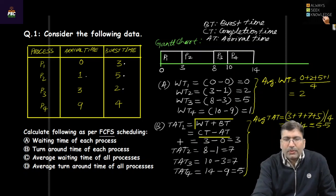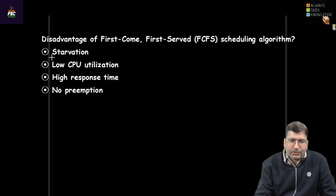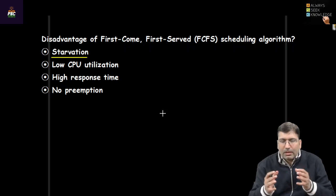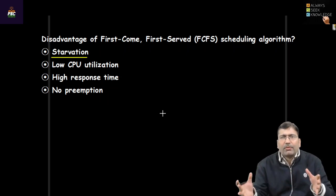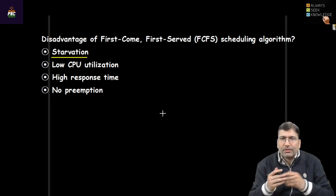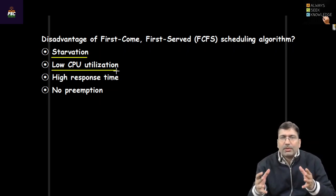Now let's discuss the drawbacks of First Come First Serve. First, there can be a starvation problem — if a process requiring a very large number of CPU cycles arrives early, the remaining processes requiring fewer cycles will wait for a very long time. Because FCFS is non-preemptive, other processes may be starved. Another drawback is low CPU utilization — if a large process arrives early, the overall waiting time increases and CPU utilization goes down.